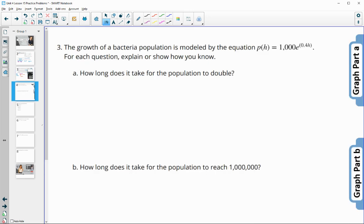Number three, the growth of a bacteria population is modeled by P of H, which is here. For each question, explain or show how you know. So how long does it take for the population to double? So we know that the population right now is 1,000. So one way we could do this is actually in your graphing calculator in Y1, put P of H, that function. And then in Y2, put double the population or 2,000.